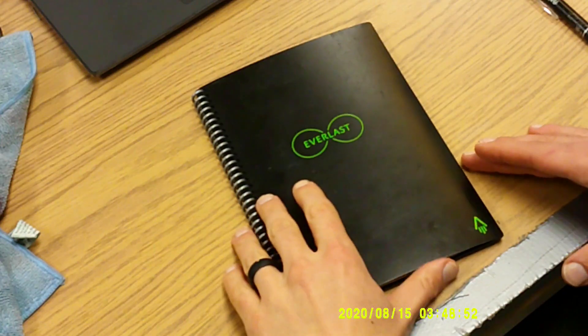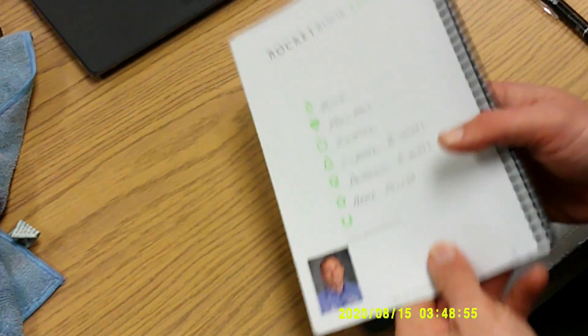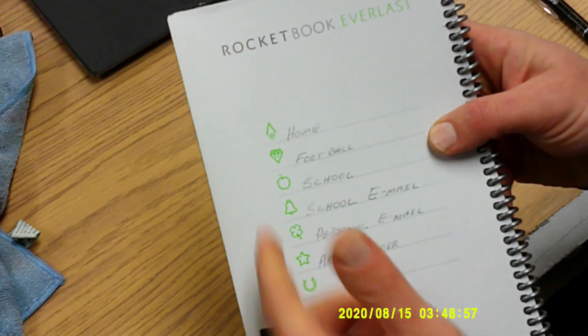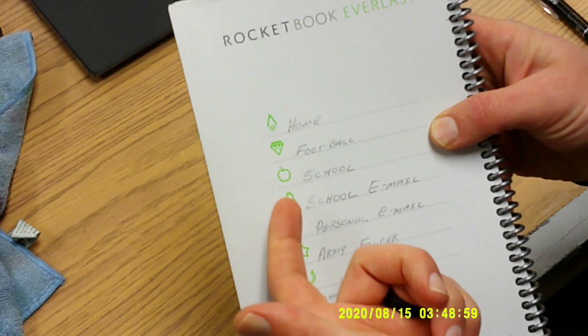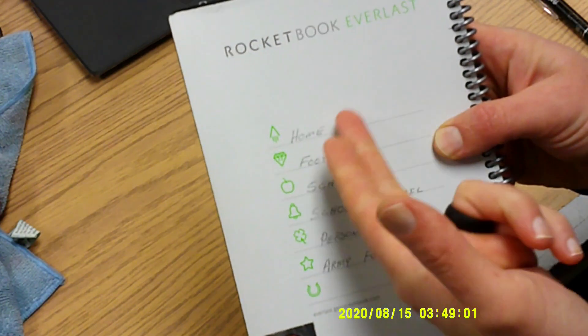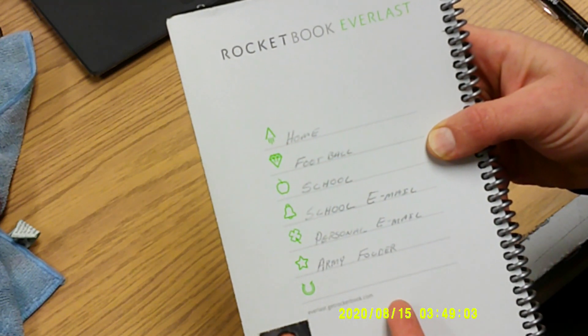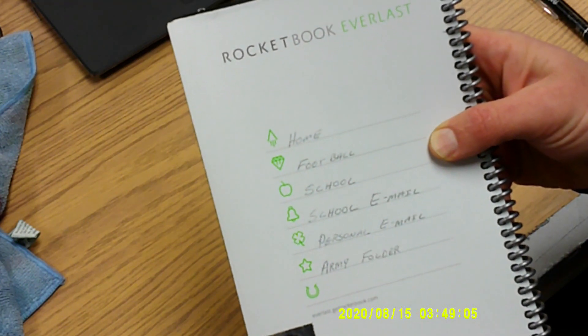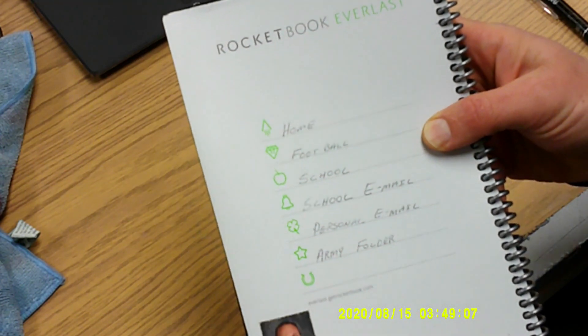I'm going to show you on the inside cover of my Rocketbook. You'll see there's a bunch of different symbols. There's a diamond, an apple, a school bell, and all of these are linked to a different place online. You can choose to have it linked to a Google Drive, an iCloud, Dropbox, or any email.